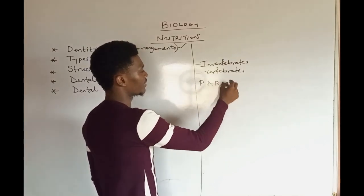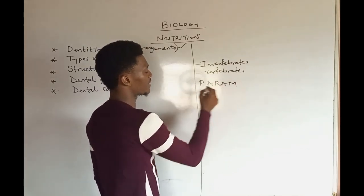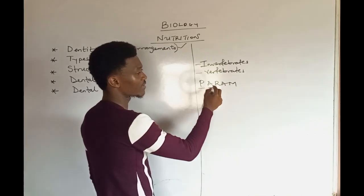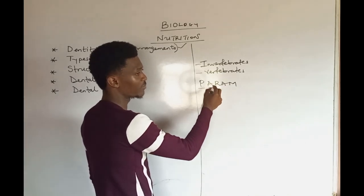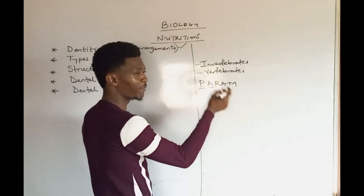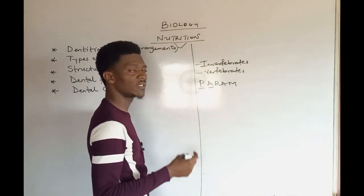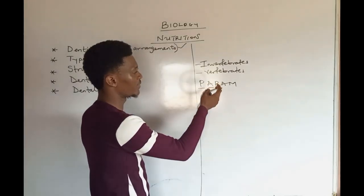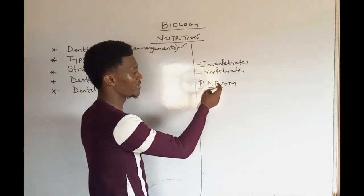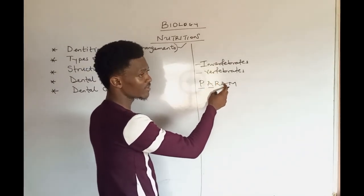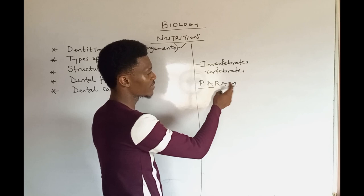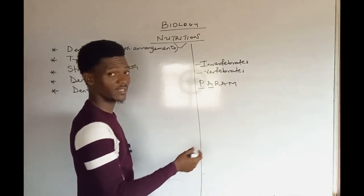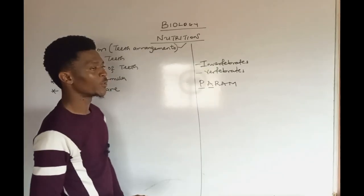Based on the evolutionary advancement of vertebrates, we have a code to remember them: PARAME. P stands for Pisces, which are the fishes. A stands for amphibians — frogs, toads, newts, salamanders and the rest. R is reptiles. A is aves, which are the birds. And M is mammals — man is an example of a mammal.